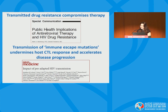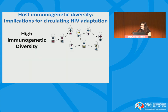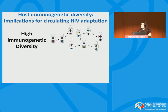Similar to transmitted drug resistance undermining antiretroviral therapy, transmission of immune escape mutations — HLA-associated polymorphisms specific to an individual's HLA class 1 alleles — is known to accelerate HIV disease progression. This is because immune escape mutations specific to an individual's HLA class 1 alleles can undermine the host CD8-positive cytotoxic T lymphocyte (CTL) response, which is critical for control of viremia.